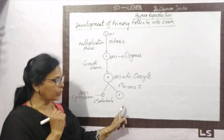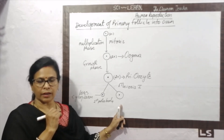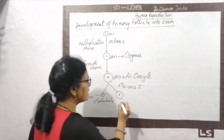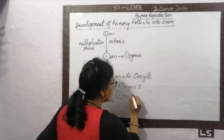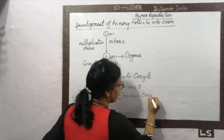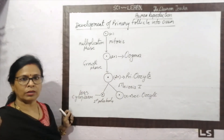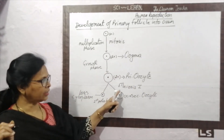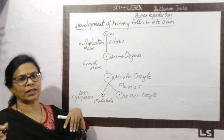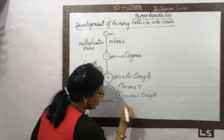The primary oocyte is 2N. After meiosis 1, the larger cell is N in nature and is called the secondary oocyte. Meiosis is not yet complete — meiosis 1 was a reductional division. Meiosis 2 follows as an equational division, and the secondary oocyte divides again. The nuclear division is equal but the cytoplasmic division is once again unequal.